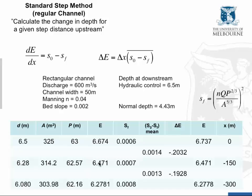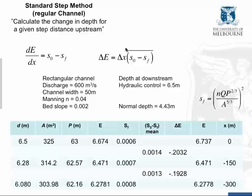We're adjusting the depth until we get an energy balance in our reach: the specific energy at the bottom end minus the specific energy at the top end equals the energy gradient times the distance over the reach. The best way to get comfortable with this is to work through it slowly yourself. You just need this equation where the specific energy change is a function of distance times the mean difference between bed gradient and energy gradient.